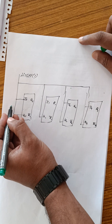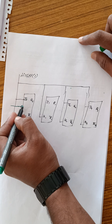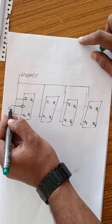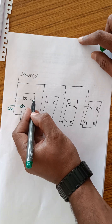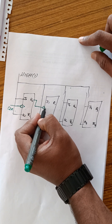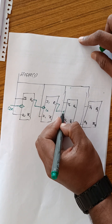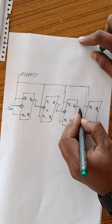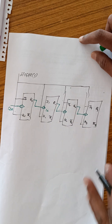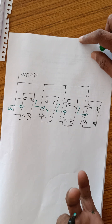The first flip-flop uses negative edge triggering — indicated by a bubble with an arrow mark. The external clock is applied to the first flip-flop. For the remaining flip-flops, the preceding output serves as the clock signal — so this is a ripple (asynchronous) counter. For a decade counter, it counts 0 to 9 only.